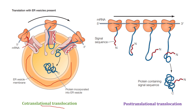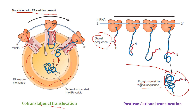This amino acid sequence is called the signal sequence — specifically the N-terminal signal sequence. In co-translational translocation, translation occurs as the protein enters the ER lumen. The ribosome synthesizes the N-terminal signal sequence first. In post-translational translocation, the entire protein containing the signal sequence is synthesized first and then transferred to the ER lumen.